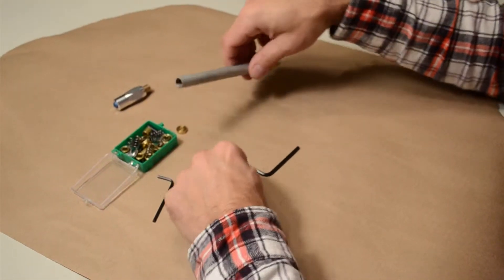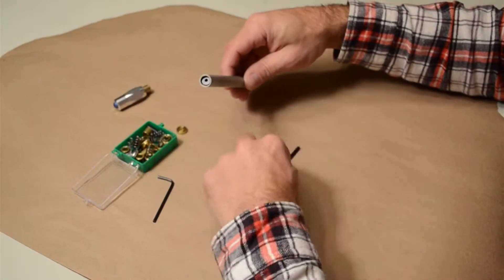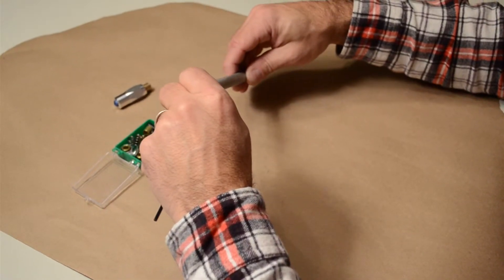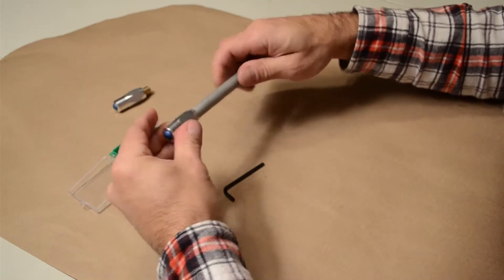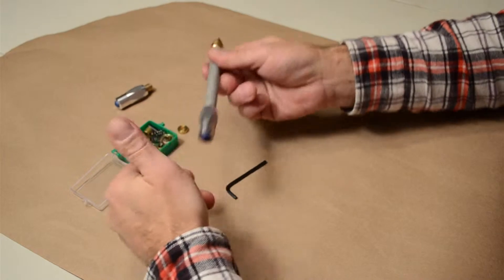So at this point though, the pen is ready to assemble as a pen. You put in that little black spacer. Maybe just tuck it a little bit with this little hex wrench. And at this point, it's a pen.